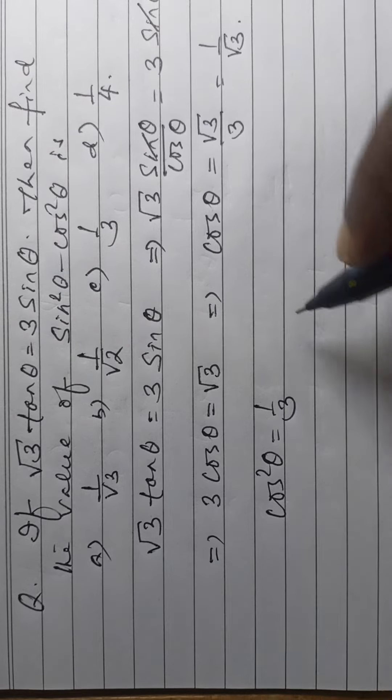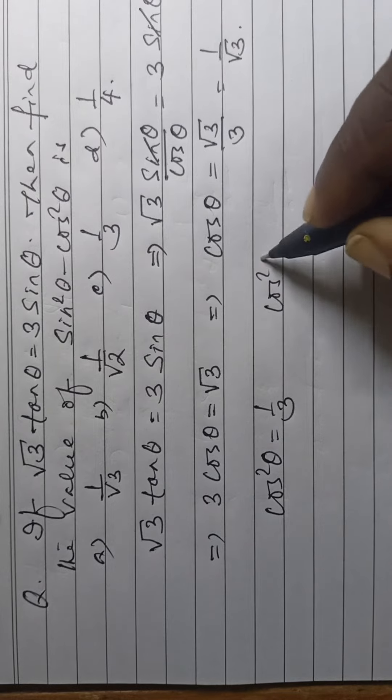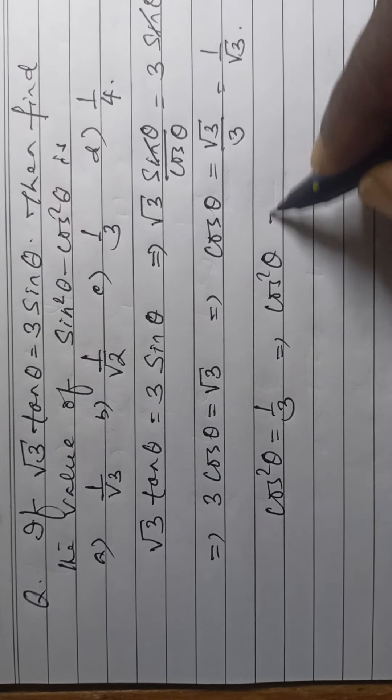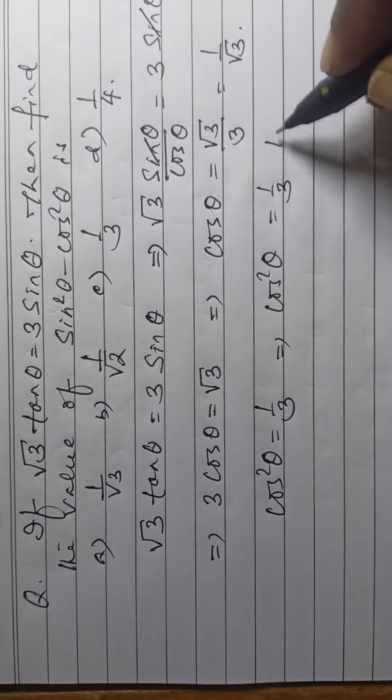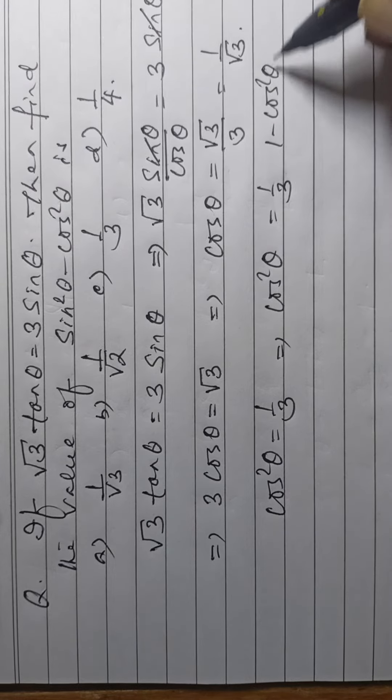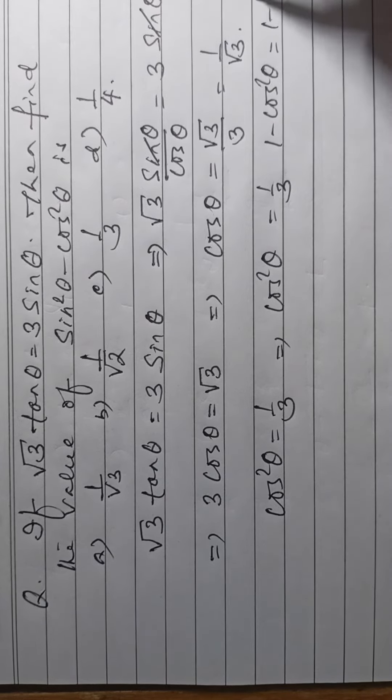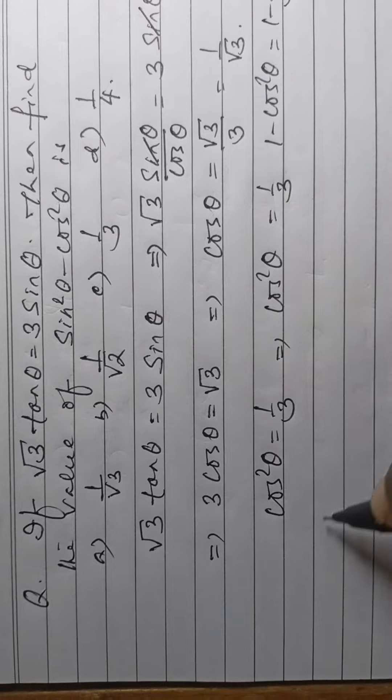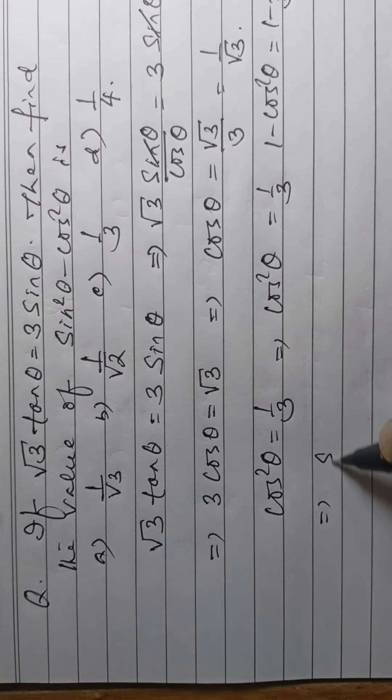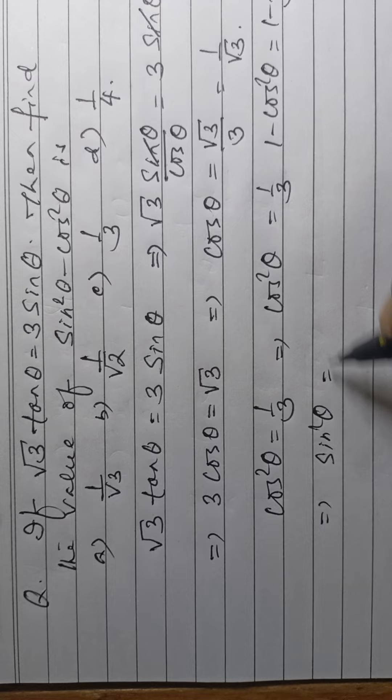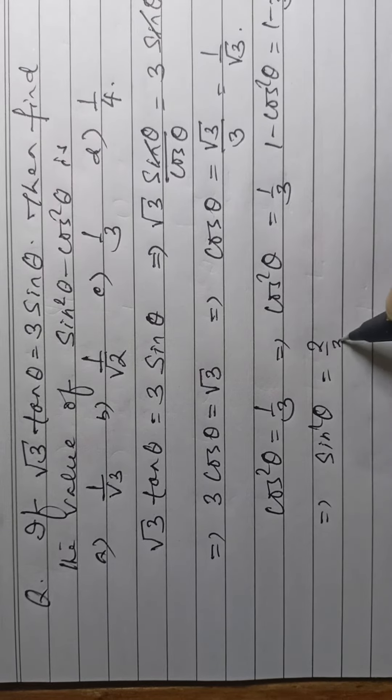So, sin square theta is equal to 1 minus cos square theta, which is equal to 1 minus 1 by 3. Then, sin square theta is equal to 2 by 3.